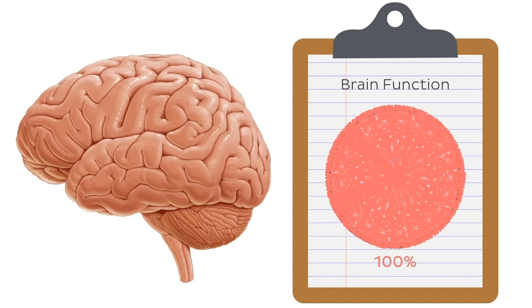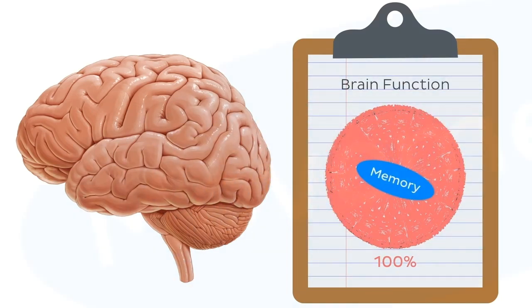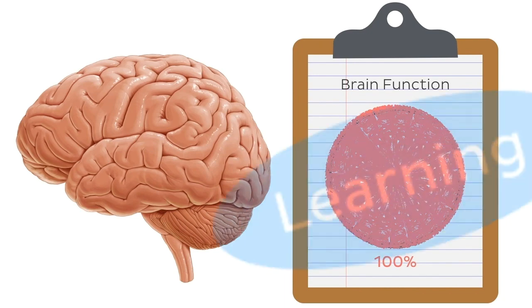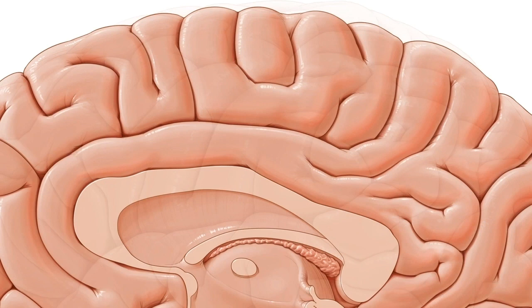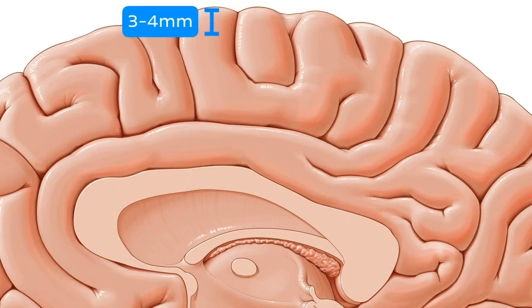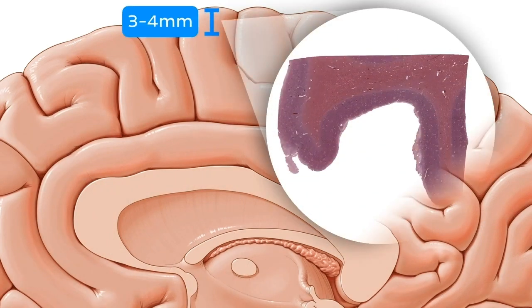The brain is responsible for functions such as movement, memory, learning — well, everything really. But in this tutorial, we're not looking at the whole brain. We're actually zooming in onto a thin 3-4mm layer of brain tissue, which is responsible for processing most of the higher functions of the brain.